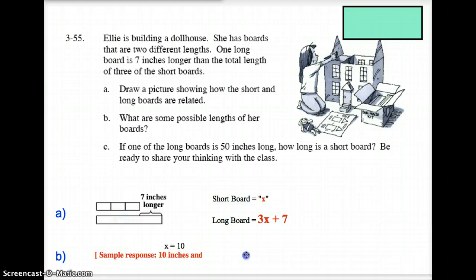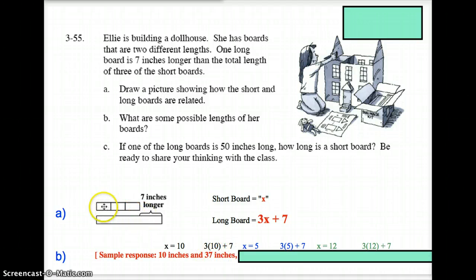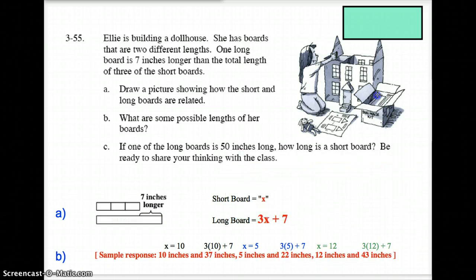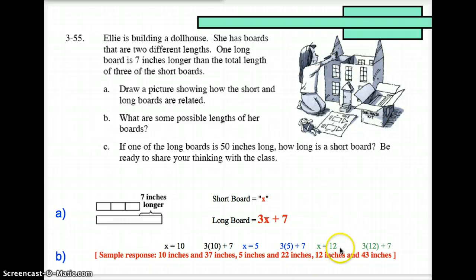We should be able to see right here: if this is 10 and the long board is 37. If the short board was 5, that's 10, 15 for those three, 15 plus 7, or 3 times 5 is 15 plus 7, then we're talking this would all be 22 inches. And the final example I've got here: if x equals 12, the short board was 12, 12, and 12 is 36, 36 plus 7 is 43 inches.